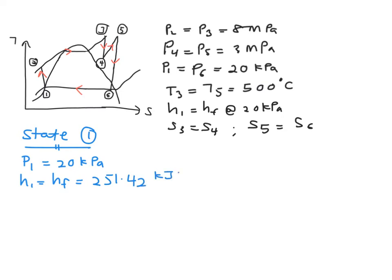251.42 kJ per kg. And that's another information that you will be needing to use in finding your state 2, which is your V1, or specific volume. Let's go to VF, which is 0.001017 meter cube per kg.